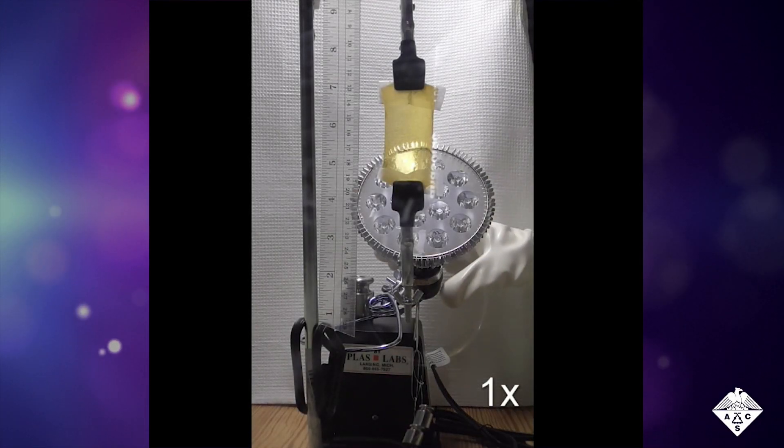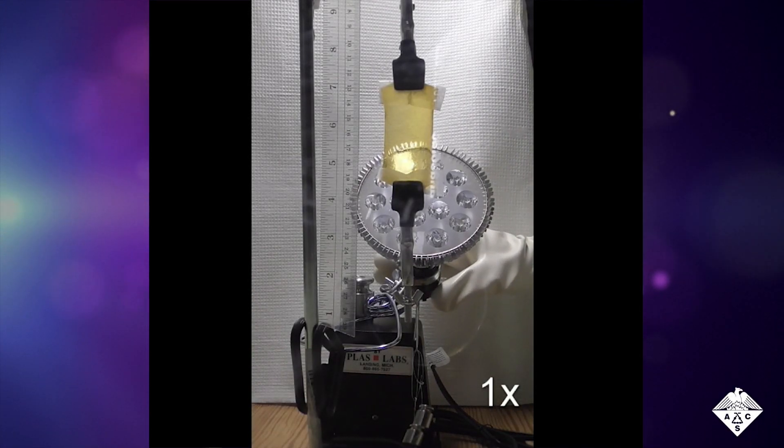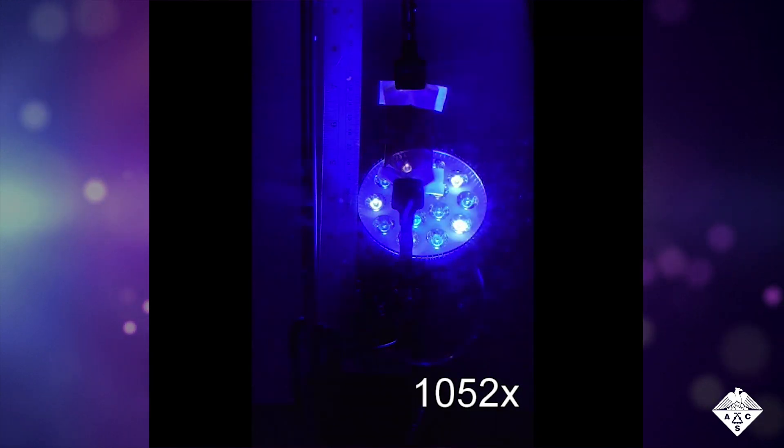At the American Chemical Society 2019 Spring National Meeting and Exposition, a team of scientists reported development of a new polymer material that can contract merely by having a blue light shined on it.